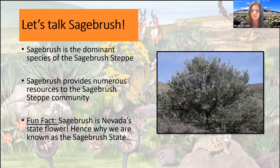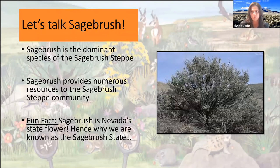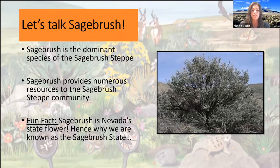Sagebrush provides numerous resources to the sagebrush community. It actually provides a critical role in the hydrological cycle — the water cycle. Sagebrush has deep tap roots that help retain water and help prevent soil erosion on the western landscape. They also have the ability to pull that water that's deep down in the ground up to the surface for other plants. Sagebrush is known as a nurse plant because of those abilities — it helps younger plants of different species along in their lives. In addition, it provides shelter for wildlife species and also is a food source for many wildlife species.